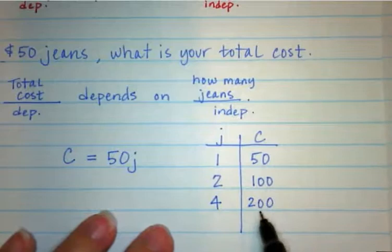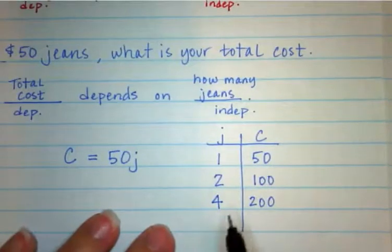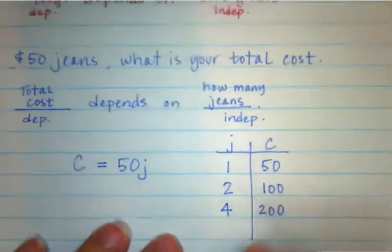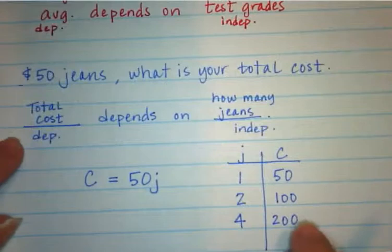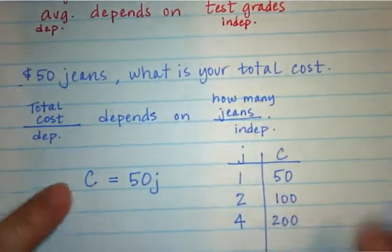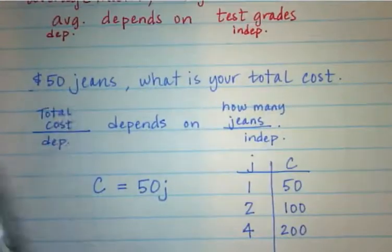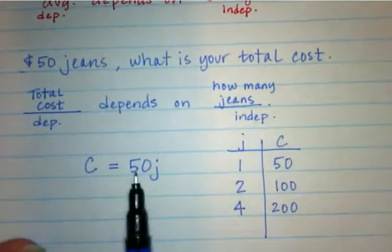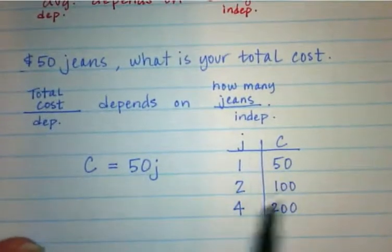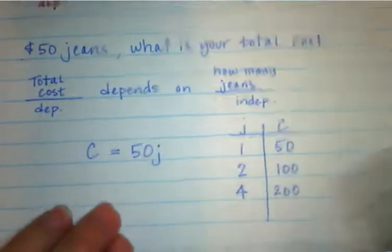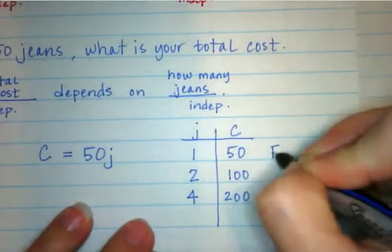So your cost depends on how many jeans you buy. So the cost is the dependent, and the number of jeans is the independent. And we could, because we were given numerical information, we could make an equation and then even make a chart. And then we know that this one is a function.